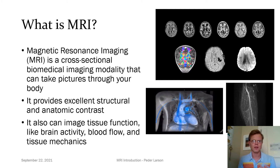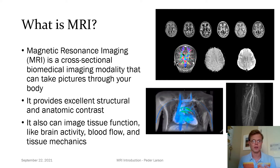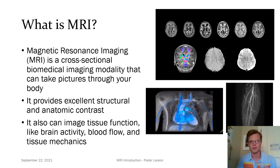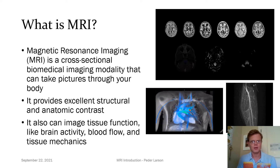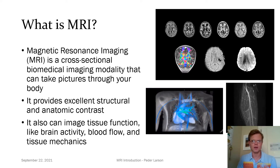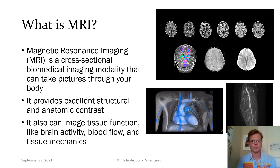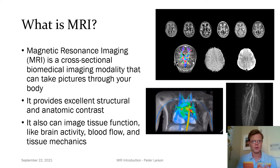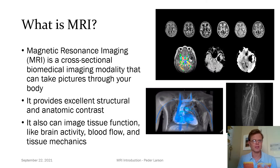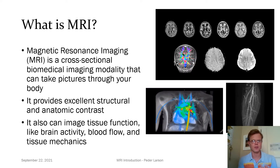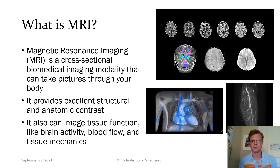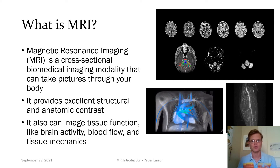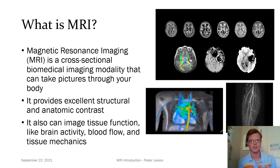So what is MRI? MRI is what we call a cross-sectional biomedical imaging modality. It basically means taking pictures through your body in all different directions of any part of your anatomy. The advantage of MRI is it really provides exceptional structural and anatomic contrast. You can see lots of different features, like are shown in the image examples here.